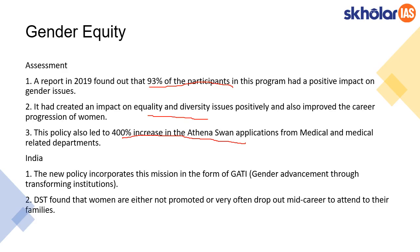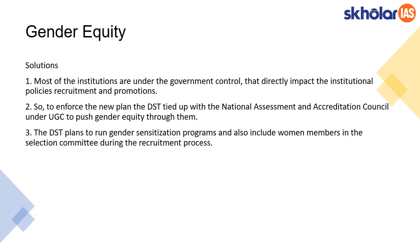What does this contribute for India? This new draft policy being drafted by DST tries to incorporate this aspect of Athena SWAN in the form of GATI — Gender Advancement Through Transforming Institutions. Students, remember this particular term GATI, as it could be asked in prelims. DST also found that women are either not promoted or drop out in mid-career because of family issues — these are the issues India faces.